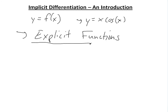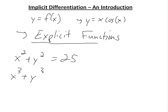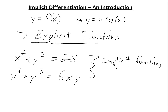But what if you have an equation like x squared plus y squared equals 25, or something like x cubed plus y cubed is equal to 6 times xy? These are called implicit functions, because y equals f of x isn't all written on one side like in this case here, like y equals x cosine x.